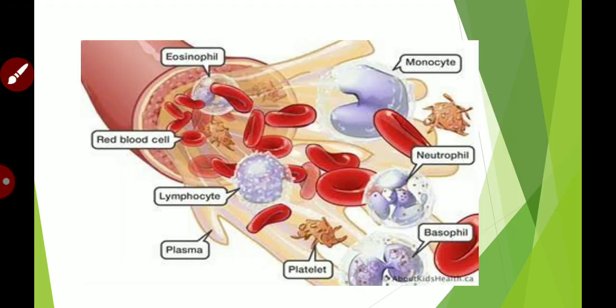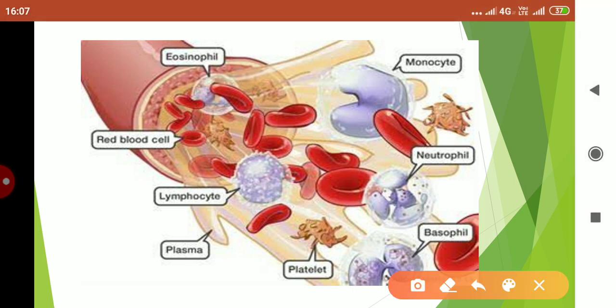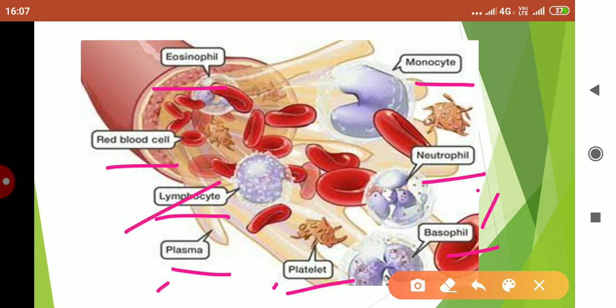Now this is the example of a blood. Now children, is blood a tissue? Just think about it. Blood is a tissue because it has variety of cells. I am underlining the cells here. You can see a monocyte, neutrophil, basophil, platelets, plasma, lymphocyte. Plasma is not a cell. Red blood cells all are present here.